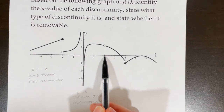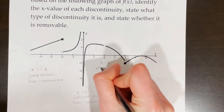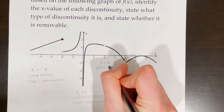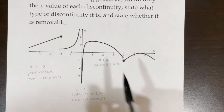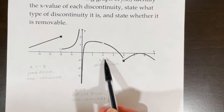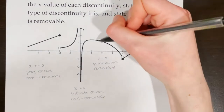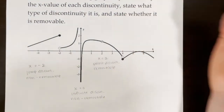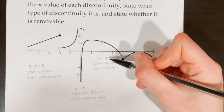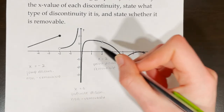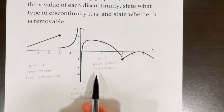The next discontinuity is at x equals 2, and that is a point discontinuity — also called a hole in a rational function. Point discontinuities are removable because we can plug the hole. If we have a hole at x equals 2, we can fill in that single coordinate point, and the function would be continuous. So it is a removable discontinuity.